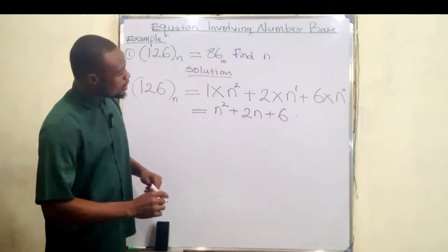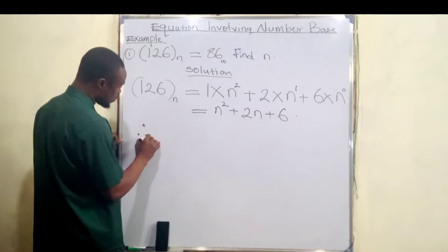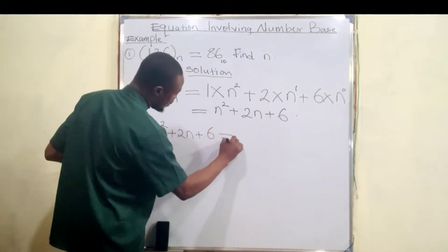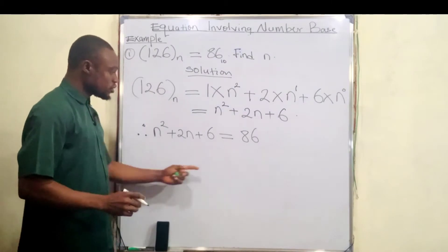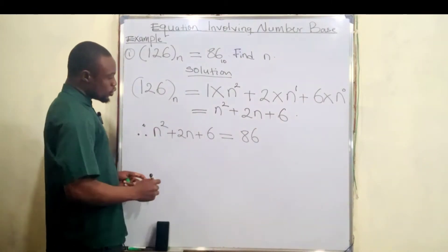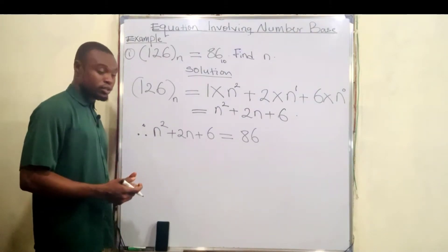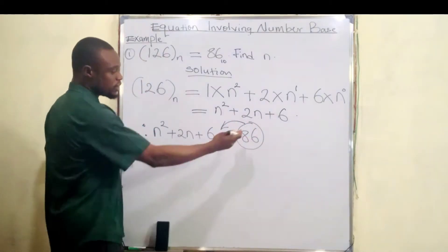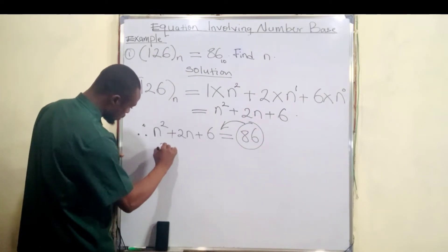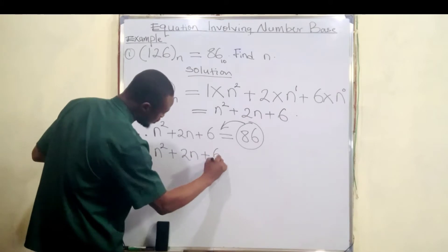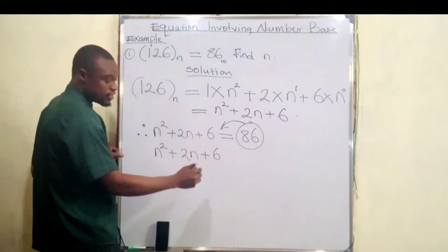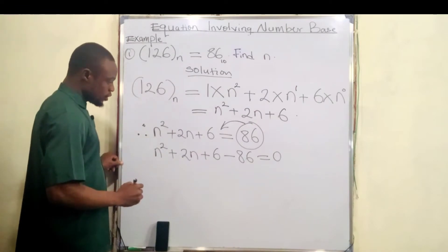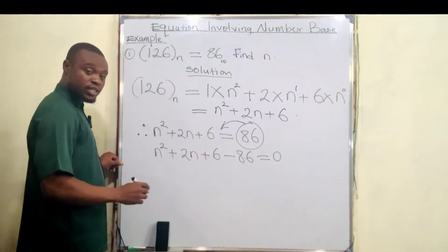We're going to equate this with what we have here, which is 86 base 10. So therefore n² + 2n + 6 = 86. Since they are all in base 10, there's no need to write the 10. This is now looking like a quadratic equation. So what we are going to do is move 86 from the right-hand side to the left-hand side, so 6 minus 86 becomes minus 80.